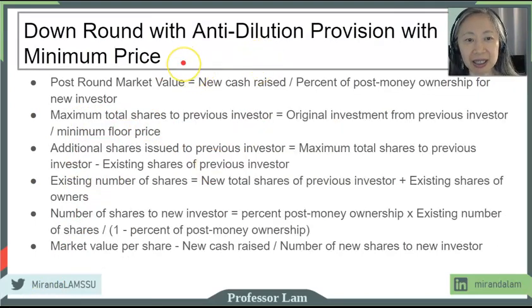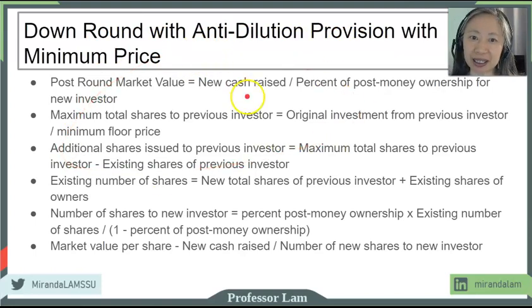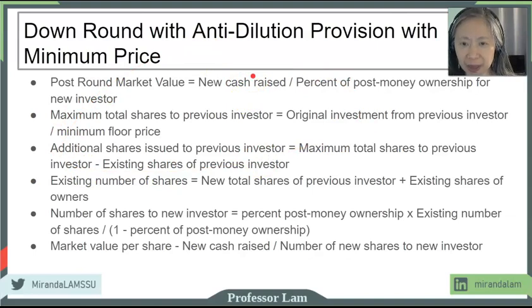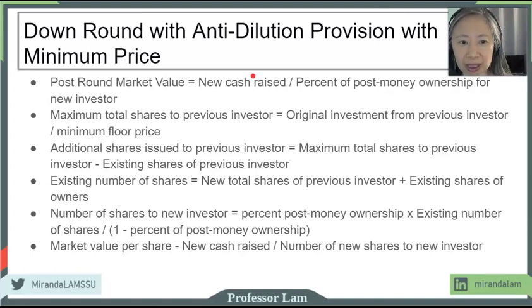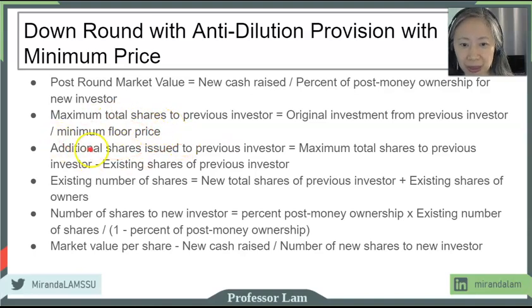Here are the steps and equations related to a down round when the anti-dilution provision has a minimum price. All these formulas are available in the textbook. What I'm going to do here is give you a conceptual overview. Notice that the value to the owner is not computed directly. Instead, we figure out what is the maximum total shares to the previous investor — this is where the minimum floor price comes in.